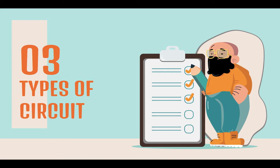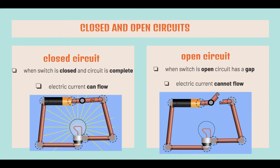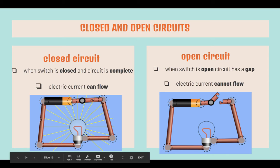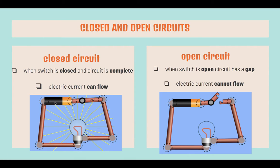Moving on, what are the different types of circuits? Firstly, we have a closed and open circuit. A closed circuit is when the switch is closed and the circuit is complete. Electric current can flow through it, and the bulb lights up as electric current flows through it.